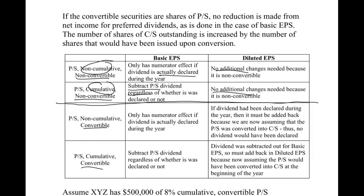Notice these bottom two are both convertible. They are the same as the top two for basic earnings per share — cumulative versus non-cumulative works the same way. The difference is in diluted. If they're convertible, we're saying at the beginning of the year they would have been converted into common stock. So if they were converted into common stock, there never would have been a dividend in the first place. We need to add it back if it was taken out in basic. If it's convertible and the dividend was subtracted in basic, we add it back in diluted because we're saying it never would have happened — it would have all been converted into common stock. So if it was subtracted in basic, add it back in diluted. If we did nothing, do nothing.